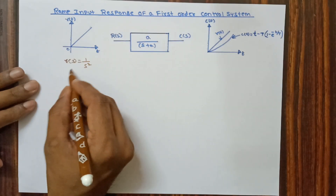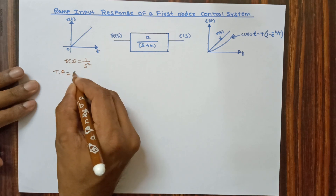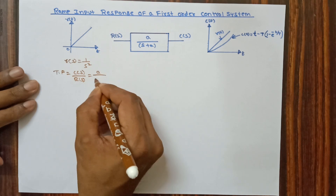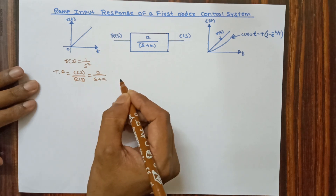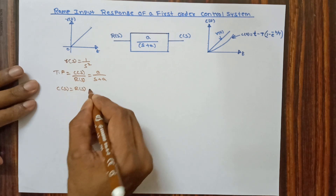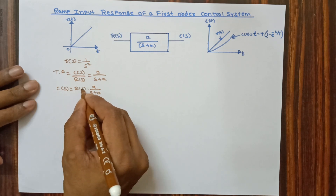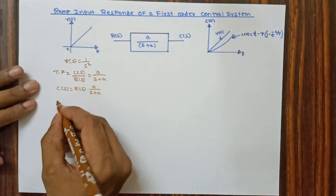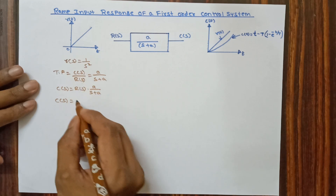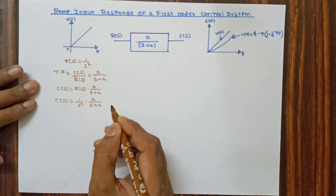This is our reference input we are going to apply to the first order system. We know that the transfer function T(s) = C(s)/R(s) = a/(s+a). Therefore, output C(s) = R(s) · a/(s+a). For ramp input, R(s) = 1/s², so substituting R(s), we get C(s) = (1/s²) · a/(s+a).